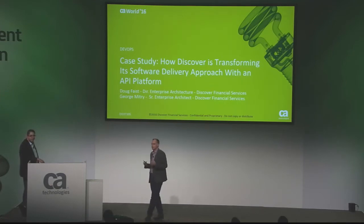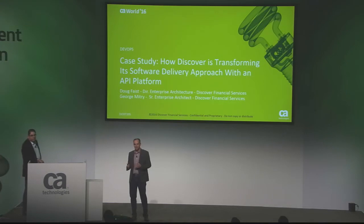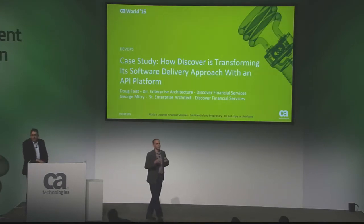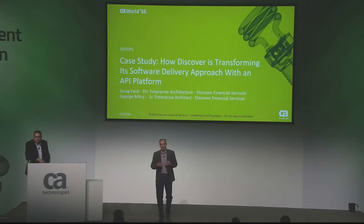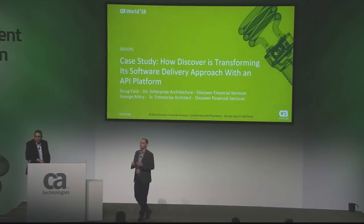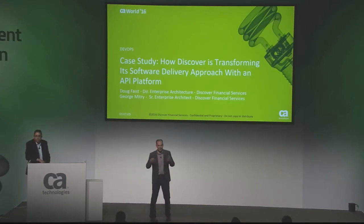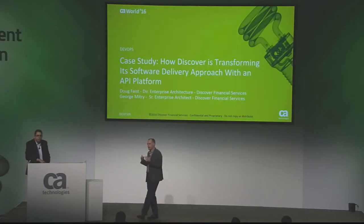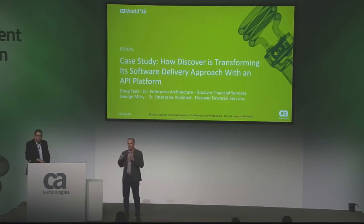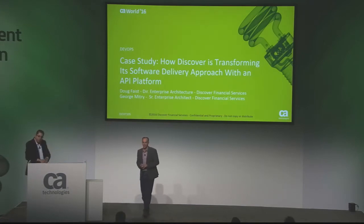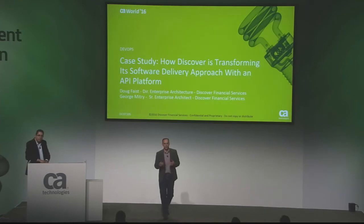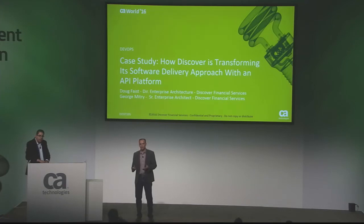My group in Enterprise Architecture is really focused on a lot of different dimensions as it relates to this transformation — everything from how we're evolving a cloud platform, how we're driving real-time capabilities within the organization, as well as CICD, test automation, and a lot of those things related to how we transform. We also have a real focus on leveraging an API platform. I have George Mitry here from my team. He's a senior enterprise architect and has really been leading the transformation on both a business side and a technology side as it relates to APIs and how we're leveraging them.